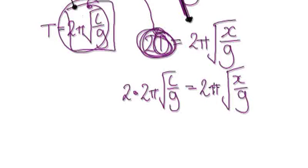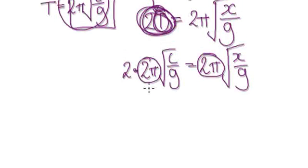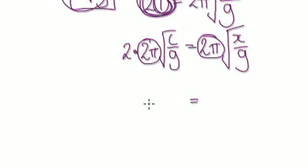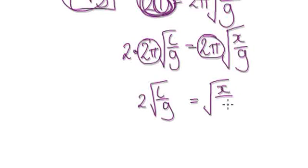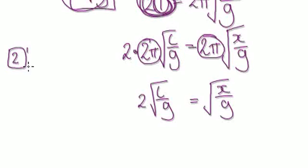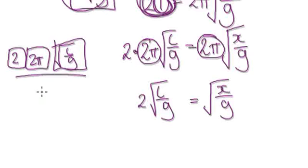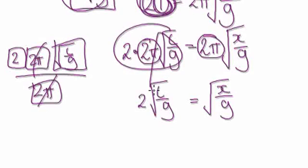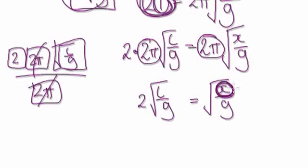Now divide both sides by 2π. On the left you have 2 × 2π × √(L/G), so dividing by 2π leaves 2√(L/G). On the right, 2π√(x/G) divided by 2π leaves √(x/G). The 2π terms cancel each other out.